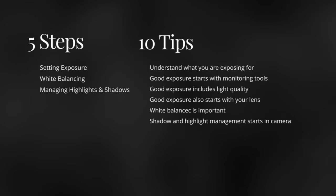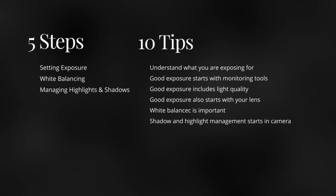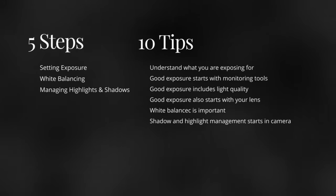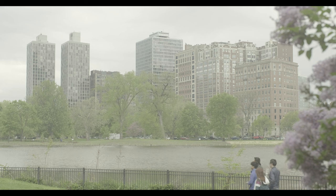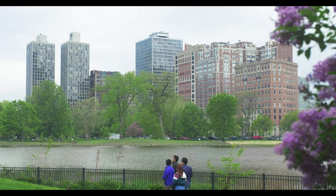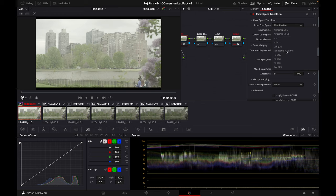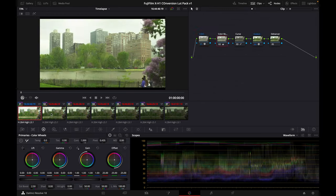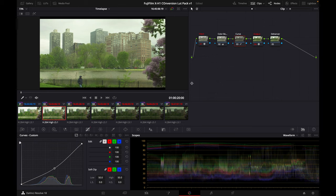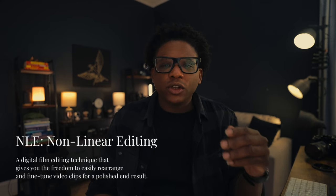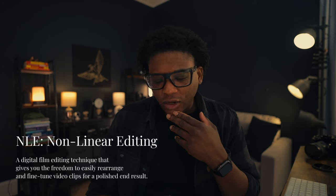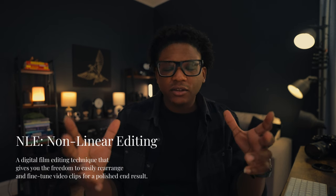Step three: manage your highlights and shadows, which leads us to tip six. Managing the highlights and shadows starts in camera, but they also have to be monitored when you're working with your footage. You can monitor your highlights and shadows using your monitoring tools and your video software, also known as your NLE. An NLE is your video editing software — I always heard other creators refer to it and never knew what they were talking about, so I wanted to add that in.